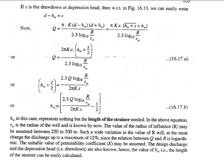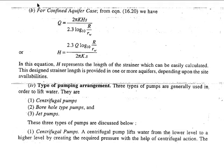For a confined aquifer, we use the corresponding formula, from which we can get the value of h, which equals the length of the strainer, and that can be easily calculated if all other quantities are known. The design strainer length needed is then provided in one or more aquifer layers, depending on site availability.